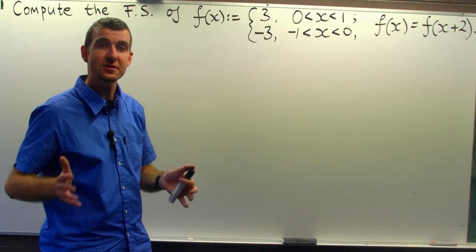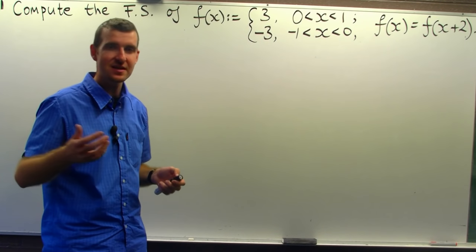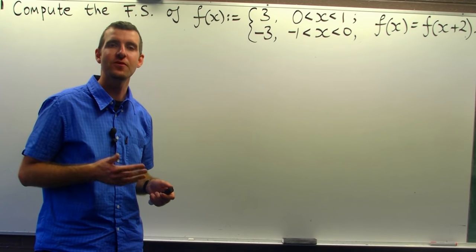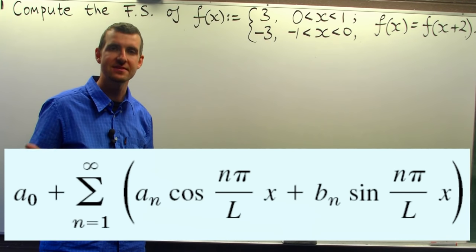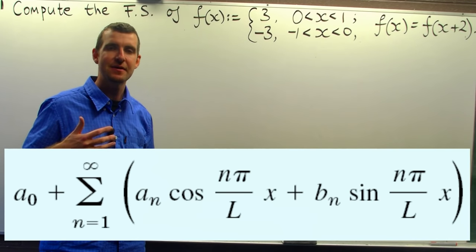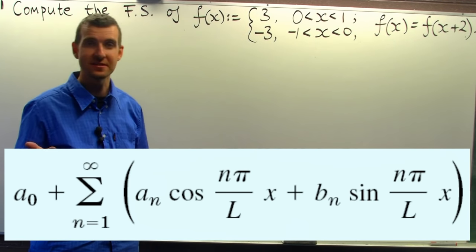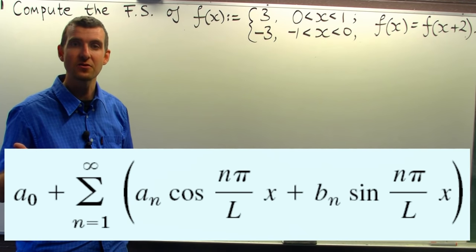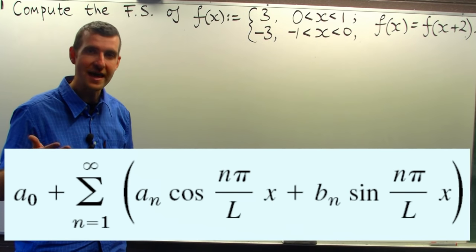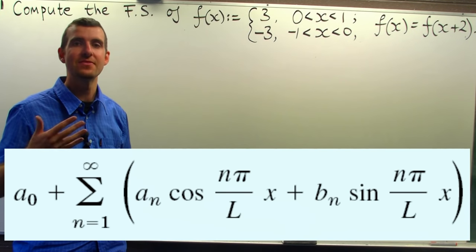Now Fourier series are just a kind of series that involve cosines and sines. When we calculate a Fourier series, we try to determine the coefficients of those cosines and sines - the a noughts, the a n's, and the b n's.